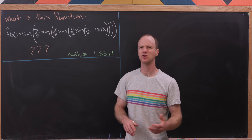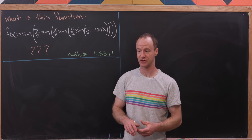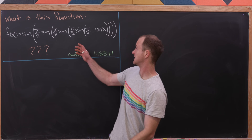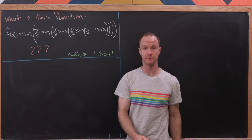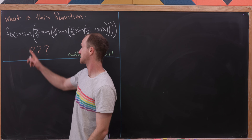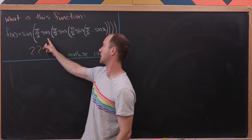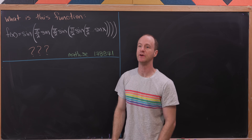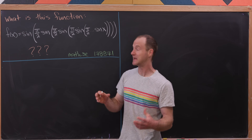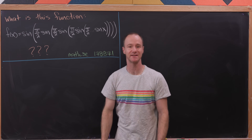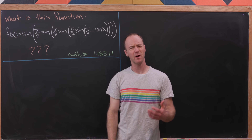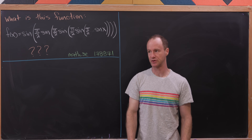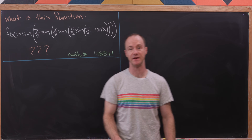Today I encountered a really interesting function while looking on the math stack exchange, and I thought I'd make a video about it. The function in question is this monster. I'll call it f of x, and it's sine of pi over 2 times sine of pi over 2 times sine of... and you can see we go on and on. In the infinite depths we have a single sine function. In order to uncover what we really mean by this function, we need to be a little bit more careful with its definition.